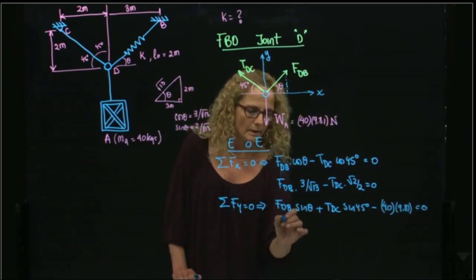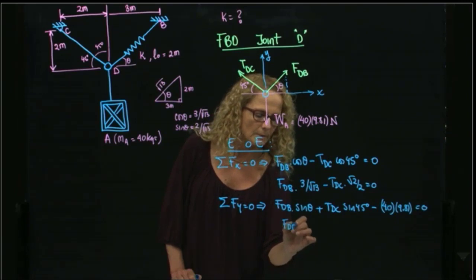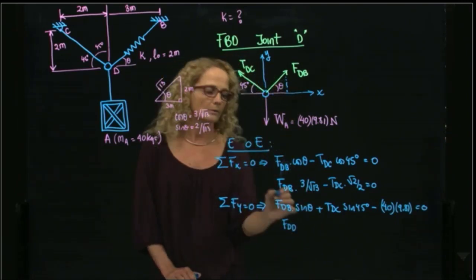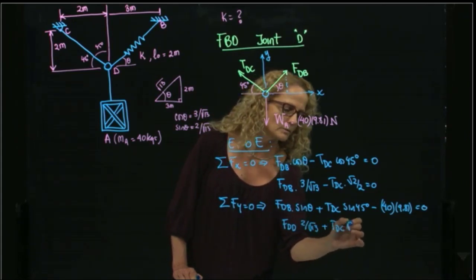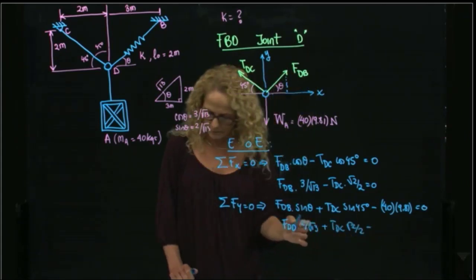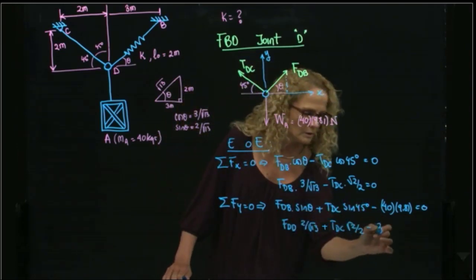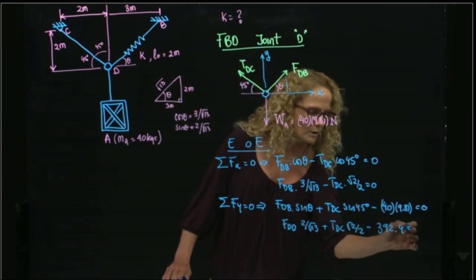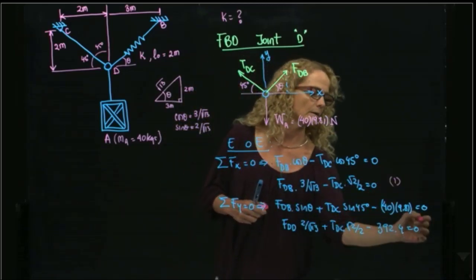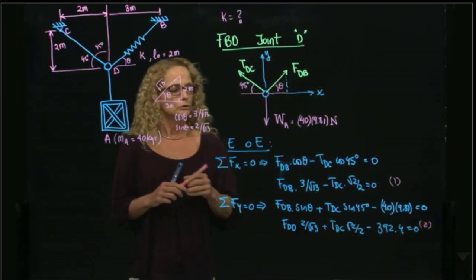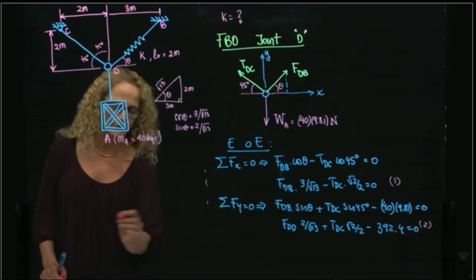And then this is fdb sine of the angle, I already said that is 2 over square root of 13 plus tdc square root of 2 over 2 minus, and that is equals to 392.4 equals to 0. So I have two equations, if I name this 1 and this 2.